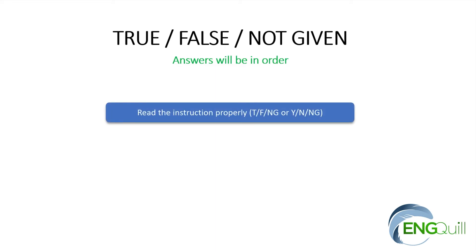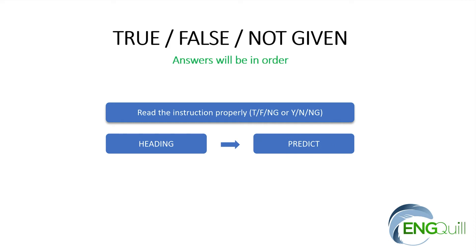Now, the first step is to read the heading. In few passages in IELTS, a heading will be given to you — some passages may have no heading. Whenever there is a heading, first look at the heading or subheading of the passage and predict. We do this because we want to understand what the passage is all about — what kind of words and what kind of information you might find there. You'll understand the importance of reading the heading when we do the exercise together.